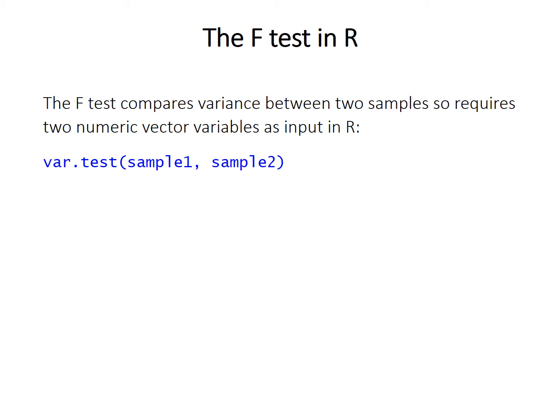In R, the F-test is this function called var.test, variance test basically. It works in much the same way as the t-test. The F-test is for two samples, so you must input two numeric vectors. These are often going to be columns of a data frame or output from a subset command, and these two numeric vectors that you're inputting are separated by a comma.